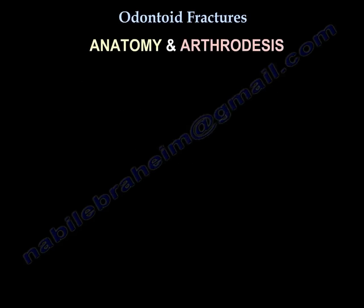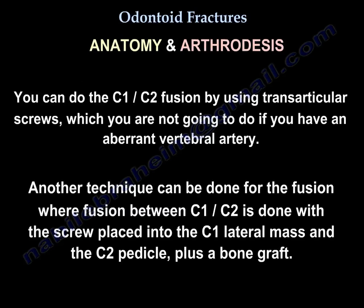For C1 and C2 fusion anatomy and arthrodesis, you can use transarticular screws — but not if there is an aberrant vertebral artery. Another technique is to place the screw in the C1 lateral mass and in the C2 pedicle, plus a bone graft.